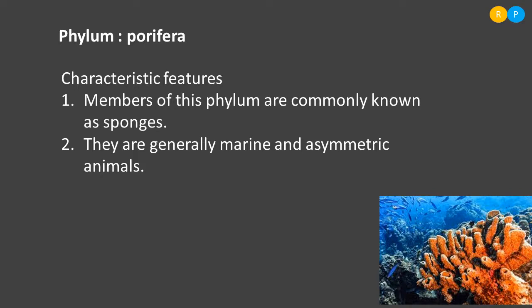Porifera members are generally marine, found in salt water. One more characteristic feature is they are asymmetric animals. Looking at the body structure, it shows an irregular body structure with no perfect shape. It is not possible to divide the body of a sponge into two equal halves from any plane, so they are examples of asymmetric animals — symmetry is completely absent.